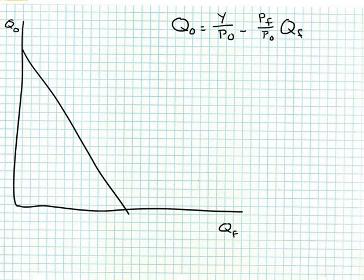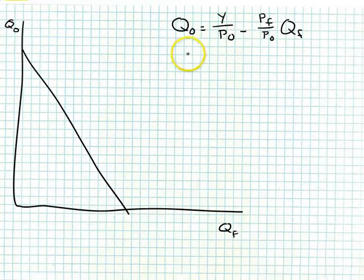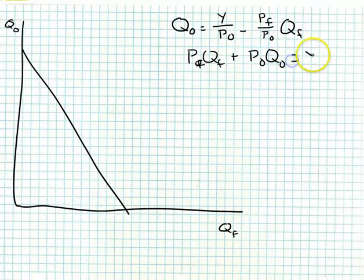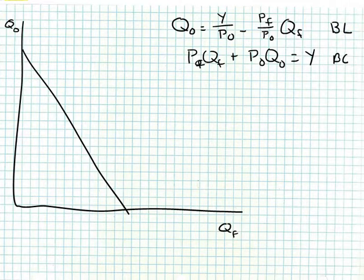I do realize that I've been using the words 'budget constraint' and 'budget line' interchangeably. So when I say a budget constraint and you see me draw a line, it just means that I have translated the budget constraint into the budget line. So when I'm drawing a line, even if I call it the budget constraint, I mean the budget line.